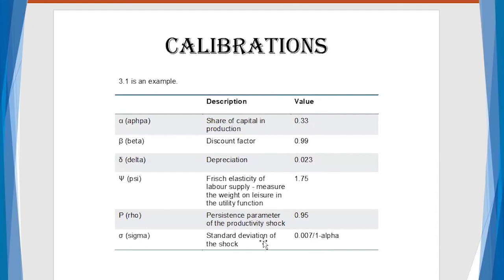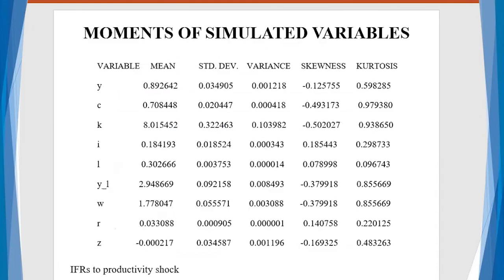So if we throw this value into our model and we run with the example of Dynare, we are going to get, one of the results we get is the moment of simulated variables. There's one, because there are several results that you can get. We will look at that when we are talking about the practical exercises. So you have all the variables in the system right here, and then you can see the values for the mean, the standard deviation, the variance, the skewness, and the kurtosis.